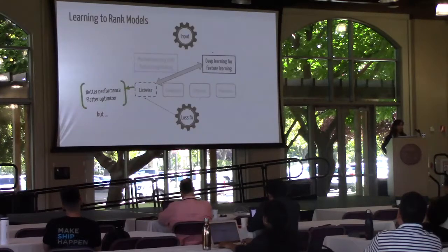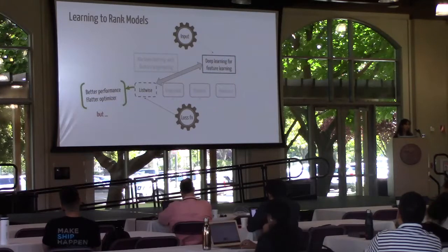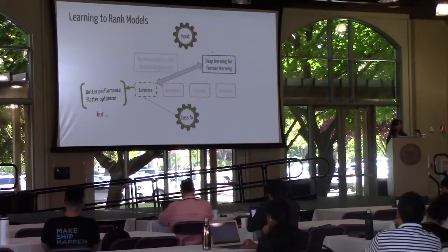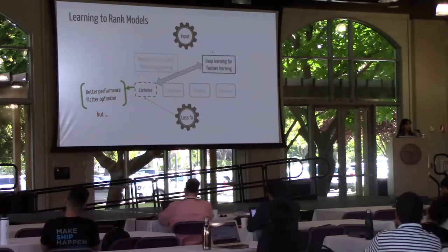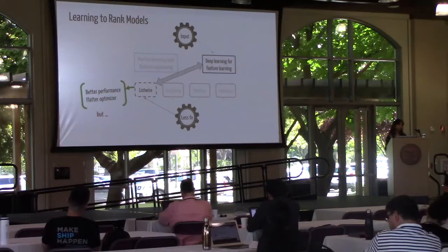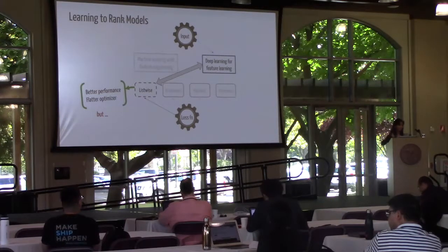So we want to see how training a neural model with a list-wise loss function can impact performance. We found that we can get better performance, less variance in gradient estimation, and a better optimizer — everything is better, but not as much as one might expect based on the results of feature-based learning-to-rank models.